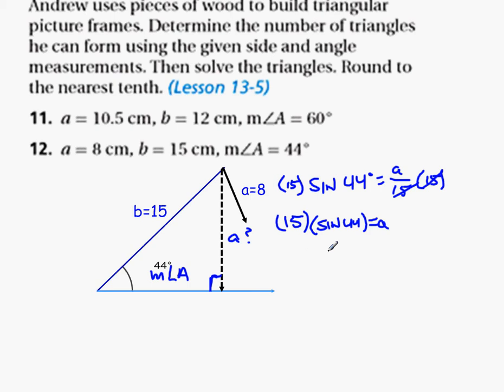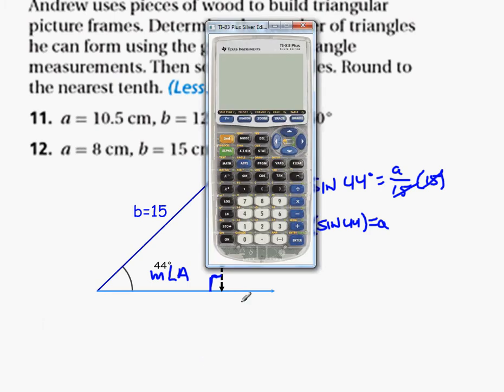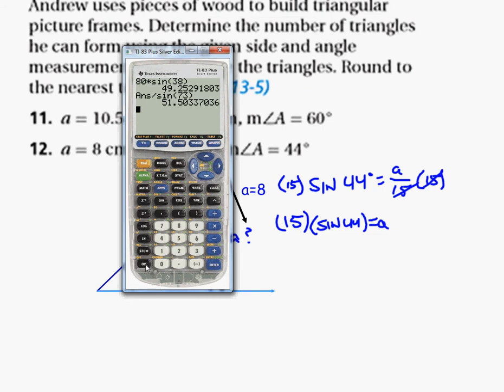So we come over here and we turn it on, and we make sure that our mode is in degrees, and it is. So we are going to go, let's clear this out. So we go 15 times sine 44, and we get 10, 10.4198.